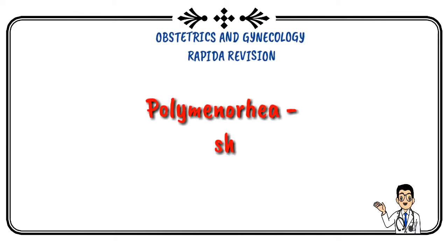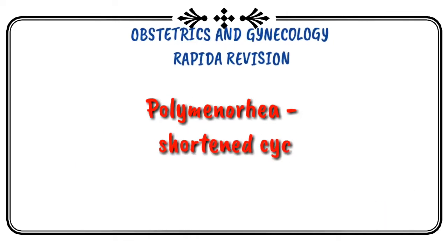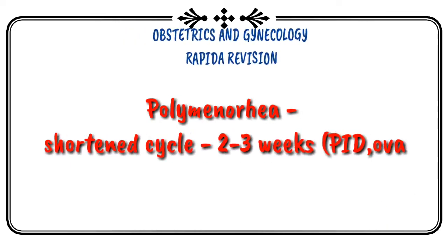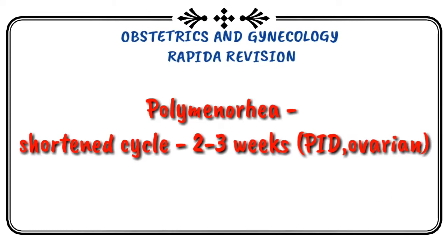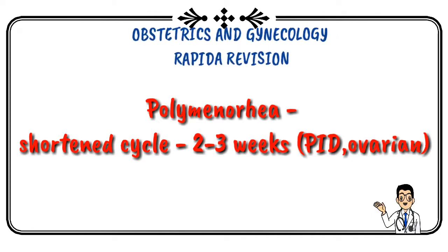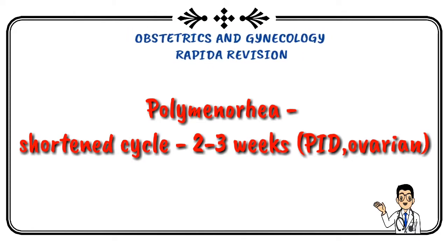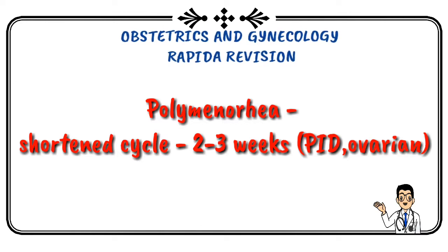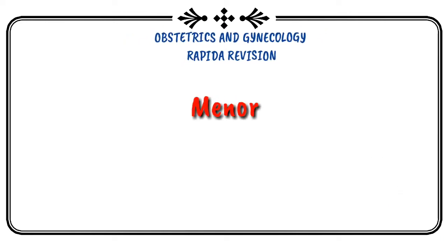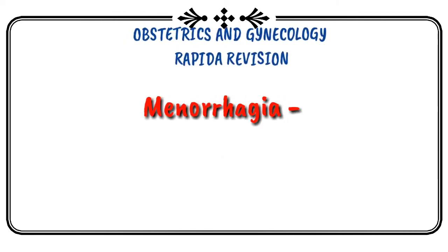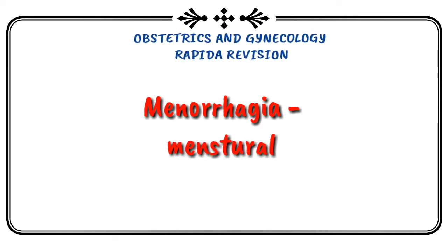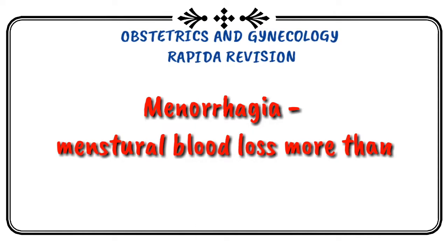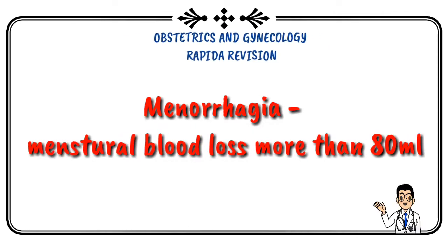Polymenorrhea is a shortened cycle of 2 to 3 weeks, associated with pelvic inflammatory disease and ovarian carcinoma. Menorrhagia is menstrual blood loss of more than 80 mL.